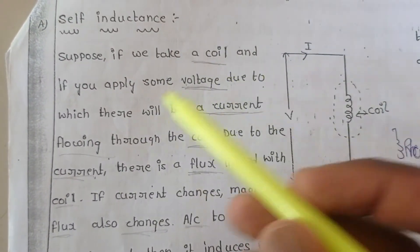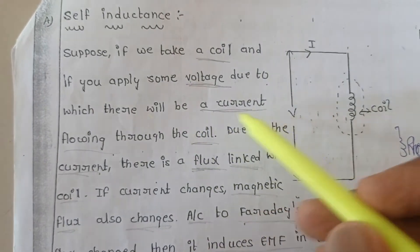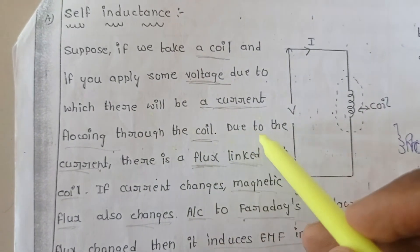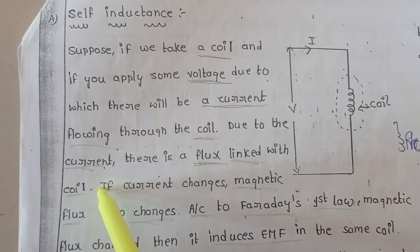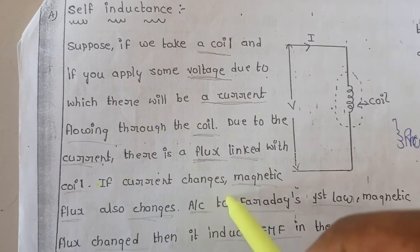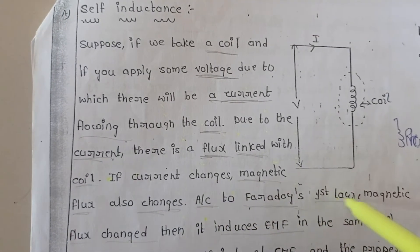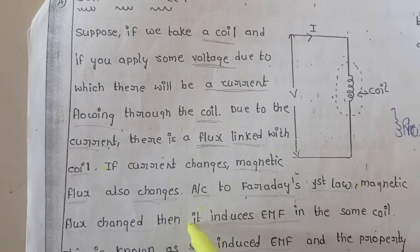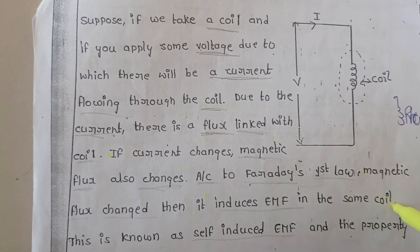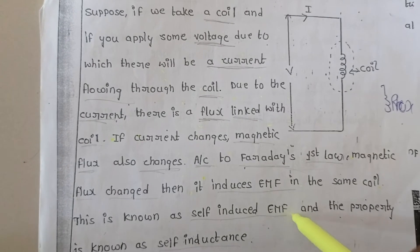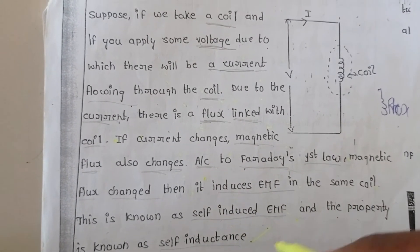If we take a coil and apply some voltage, there will be a current flowing through the coil. Due to the current, there is a flux linked with the coil. If current changes, magnetic flux also changes. According to Faraday's first law, when magnetic flux changes, it induces EMF in the same coil. This is known as self induced EMF, and the property is known as self inductance.